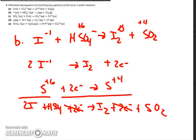Looking at oxygen: I have four on the left and only two on the right, so I need to add two water on the right. Because I added two water, I need enough hydrogen — I've got four on the left — so I add three hydrogen ions to the left side, and I now have a balanced equation.